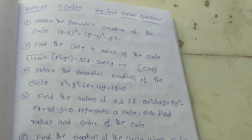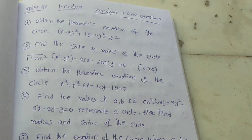First question: Obtain the parametric equation of the circle (x minus 3) whole square plus (y minus 4) whole square equal to 8 square.